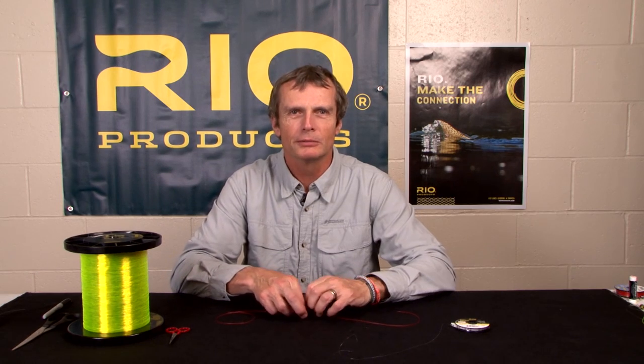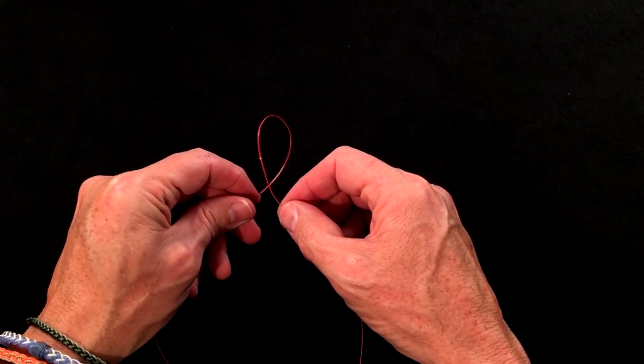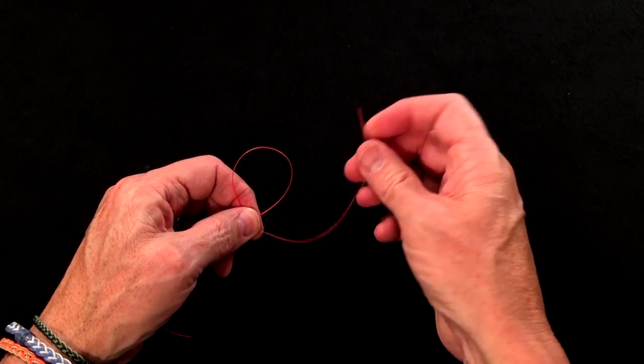Let me show you the wind knot. Not that you really want to know the wind knot, but I'm going to show you something. The wind knot is just a knot usually caused by bad casting. It ends up in your leader.